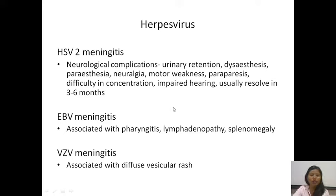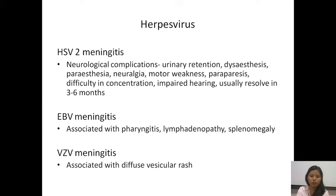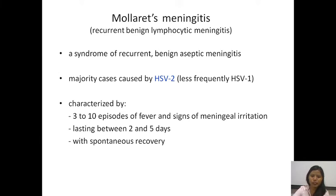Among herpes viruses, EBV meningitis can also occur. Epstein-Barr virus causes infectious mononucleosis, the most common cause of the clinical syndrome associated with pharyngitis, lymphadenopathy, and splenomegaly. Varicella zoster virus — the cause of chickenpox as a primary infection and herpes zoster as reactivation — can also cause meningitis during its clinical illness, associated with vesicular rash. There is another special term associated mainly with HSV-2 called Mollaret's meningitis, where a meningitis-like illness becomes recurrent, often benign, and episodic.